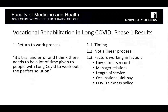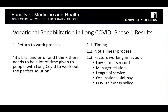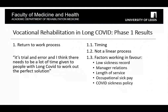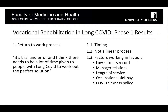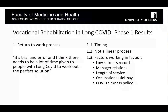Four main themes emerged. The first is the return-to-work process. Sub-themes include timing — when do you attempt to return following an acute COVID diagnosis, and at what point in the Long COVID journey? It's not a linear process; as one interviewee said, it's a trial-and-error process. People need a lot of time to work out the perfect solution, which mirrors what many experience with other long-term conditions. There are also a number of factors that worked in people's favor in returning to work.